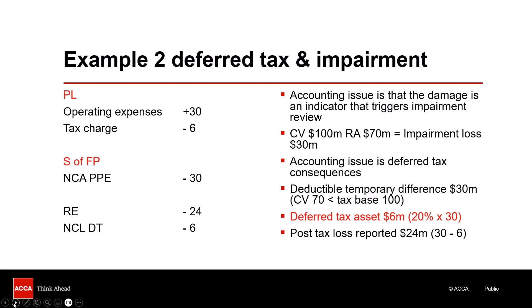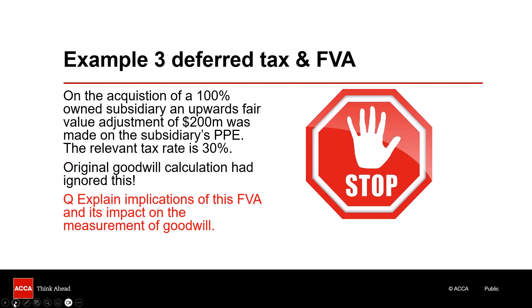Example two done — two down, one to go. Once again, this is an opportunity for you to stop the video, read the information, and think about what you would do — how you would process the impact of the fair value adjustment on goodwill and, because we're in a deferred tax scenario, the deferred tax implications.